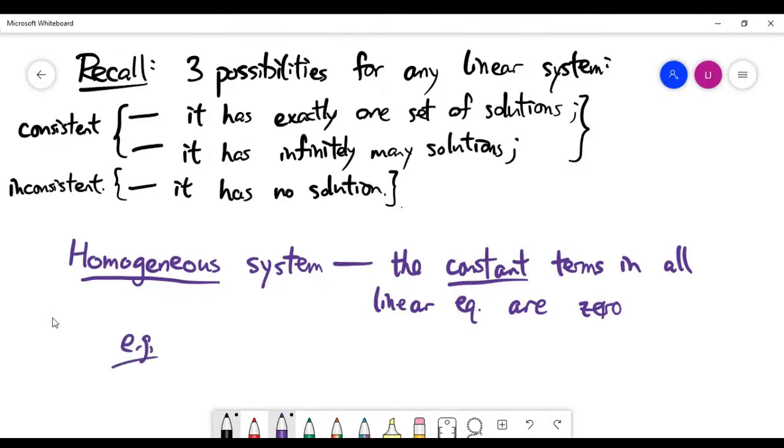For example, you can see a system like this with three unknowns and two equations. The constant is always zero, and we call it a homogeneous system.